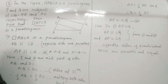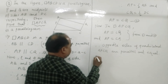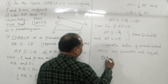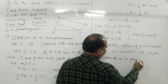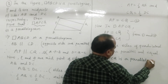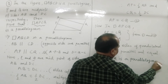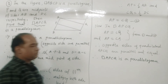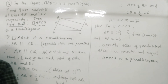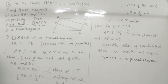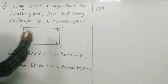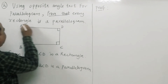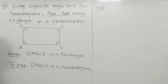Therefore, quadrilateral APCQ is a parallelogram. The second example: using the opposite angle test for a parallelogram, you have to prove that every rectangle is a parallelogram.